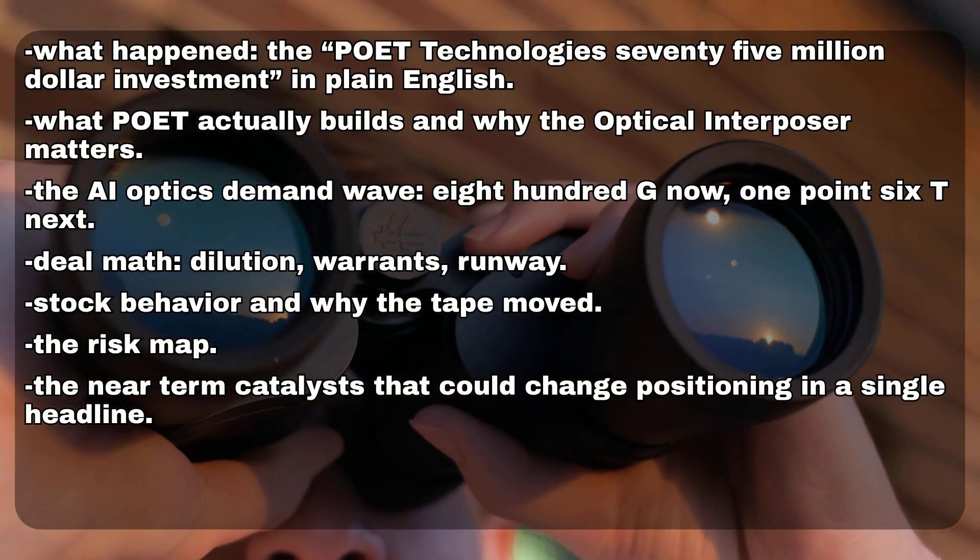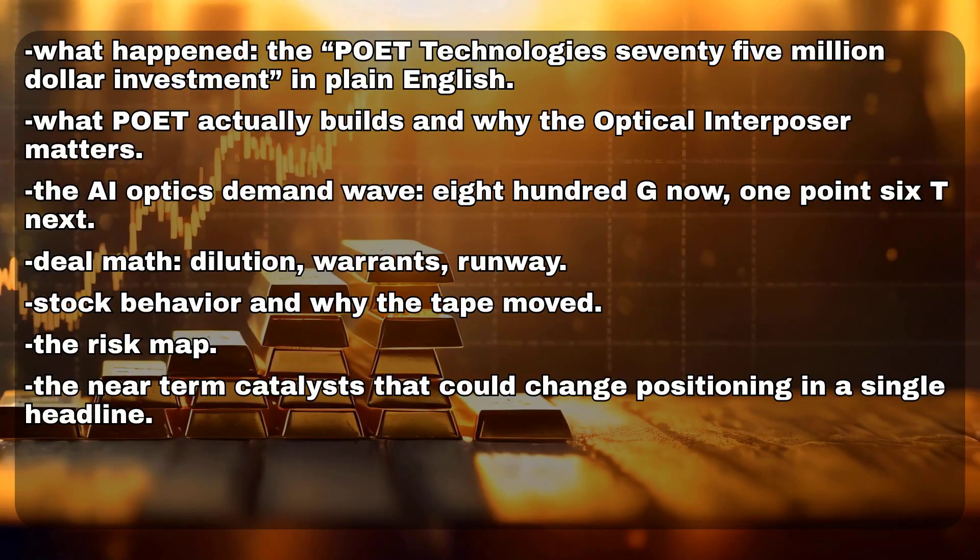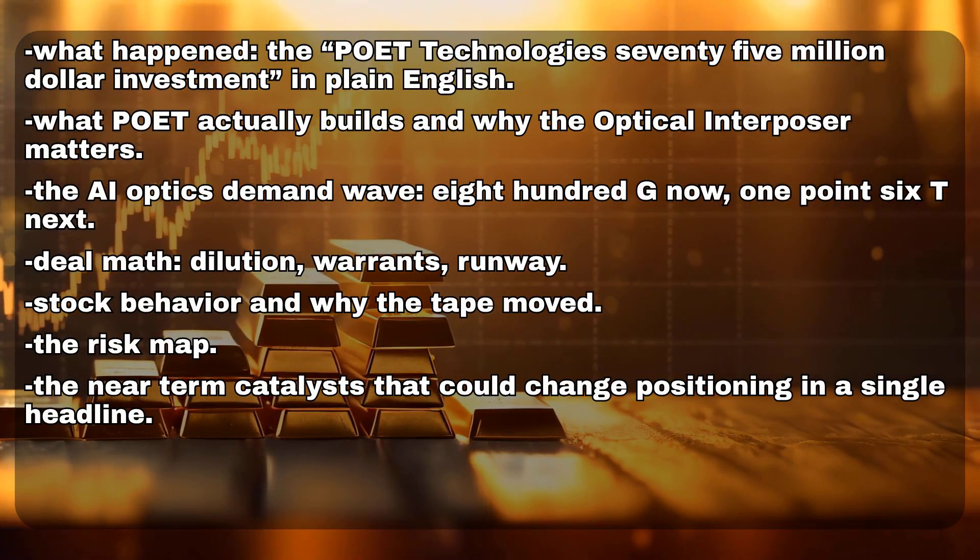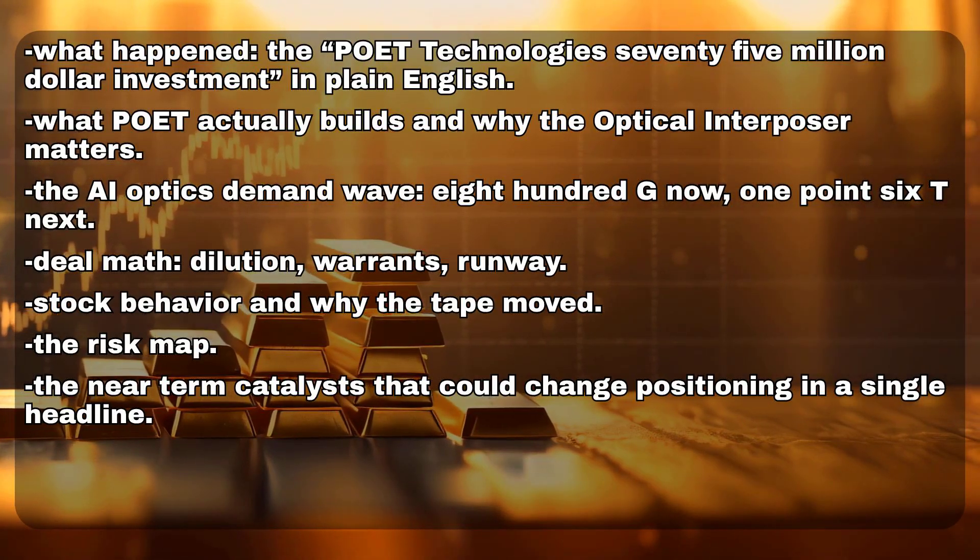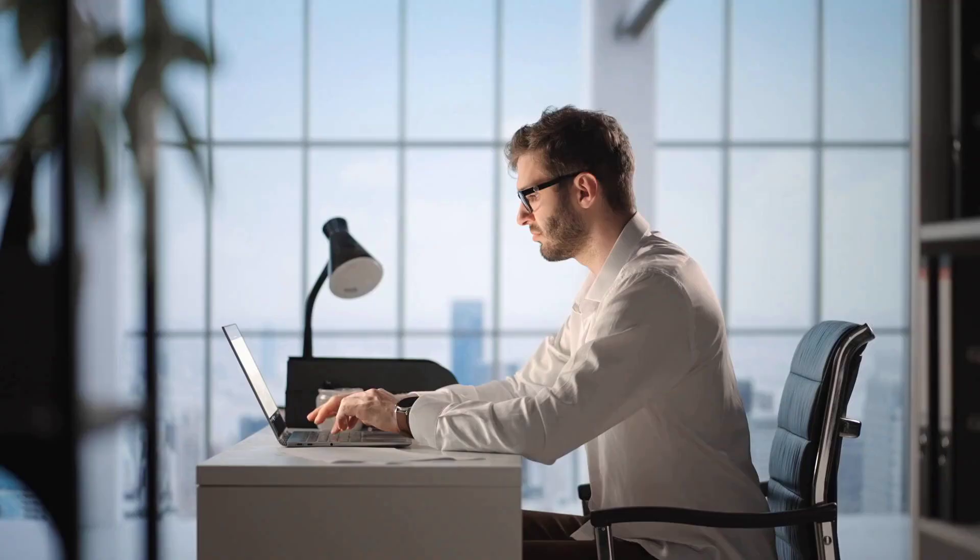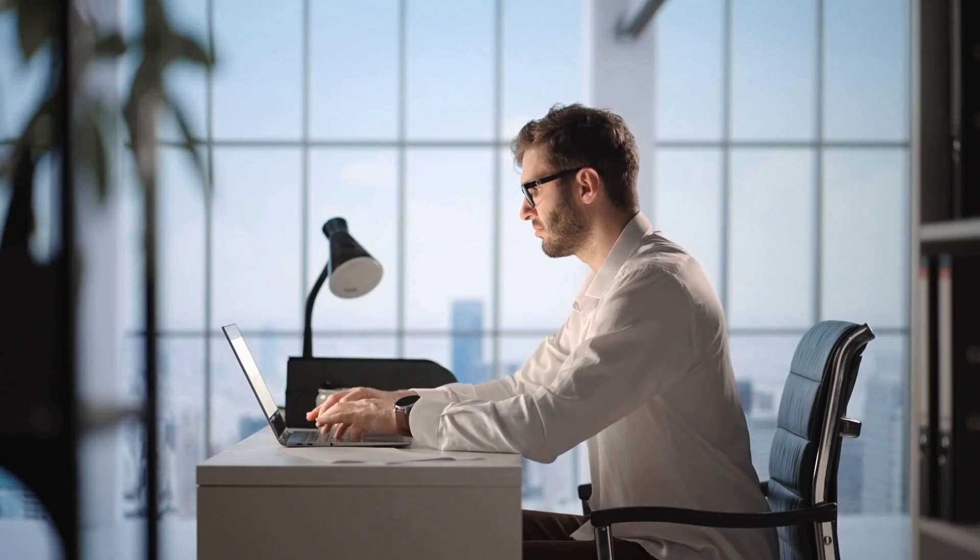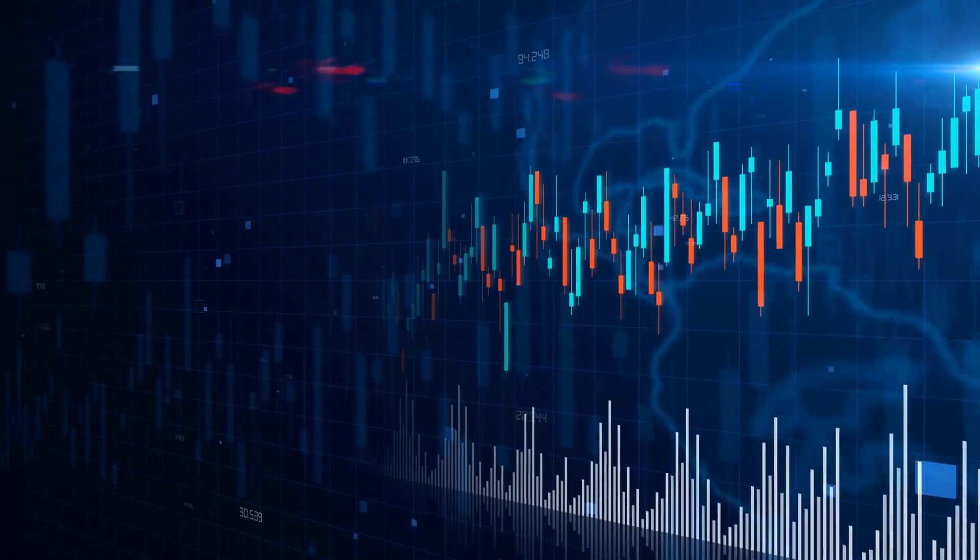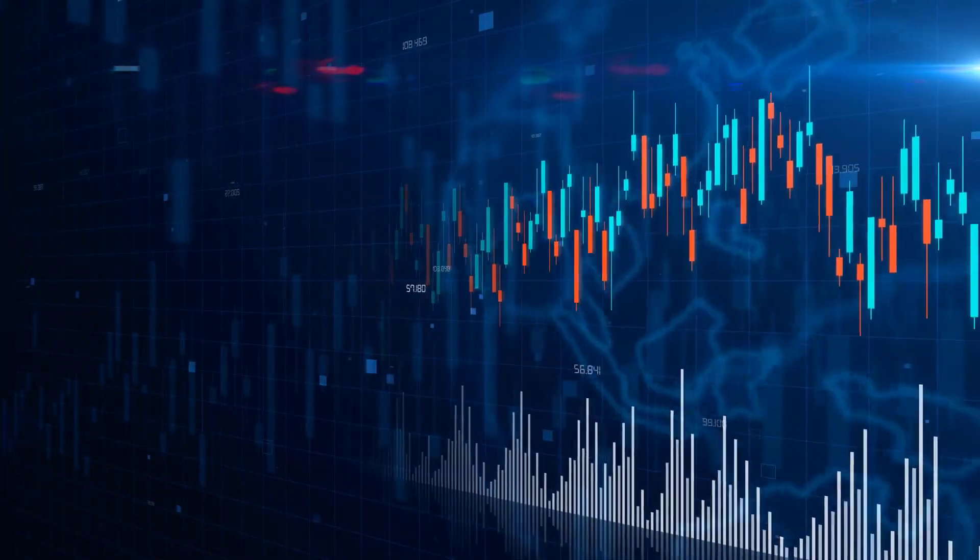Third, the AI optics demand wave: 800G now, 1.6T next. Fourth, deal math—dilution, warrants, runway. Fifth, stock behavior and why the tape moved. Sixth, the risk map. Seventh, the near-term catalyst that could change positioning in a single headline. If that roadmap helps, tap like so the algorithm knows this is worth pushing to investors who care about real analysis. And don't skip, because the disclosure window for the investor behind this deal might be the single most important near-term catalyst for POET stock.